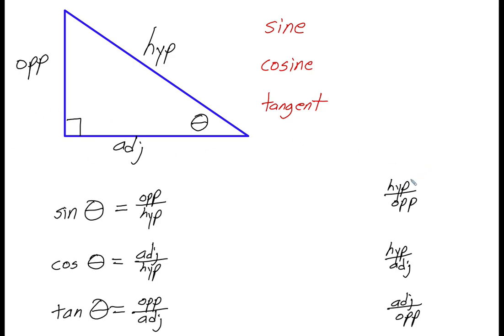The names that we give these other combinations are secant (S-E-C-A-N-T), cosecant—so just like we had sine and cosine, we have secant and cosecant—and then tangent, we also have cotangent. Secant, cosecant, and cotangent. And we abbreviate these just like we abbreviate sine, cosine, and tangent with the first three letters. We do the same thing here.